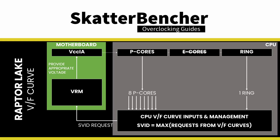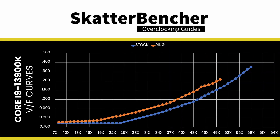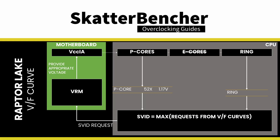As explained before, the VCCIA voltage rail drives the voltage for the CPU p-cores, e-cores, and ring, and the voltage requested by the CPU to the voltage controller is the highest among all associated VF curves. The ring frequency drops to 4.5GHz in an all-core workload on this system. Looking at the ring VF curve, the voltage associated with 45X is 1.14V, while the default p-core VF curve shows voltages for 51X and 52X at 1.15V and 1.17V. So in an all-core workload at 5.2GHz CPU and 4.5GHz ring, the VCCIA voltage is determined by the p-cores at 1.17V.